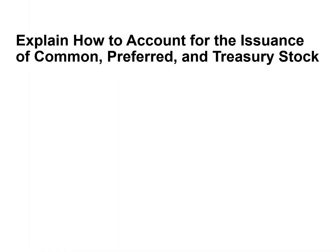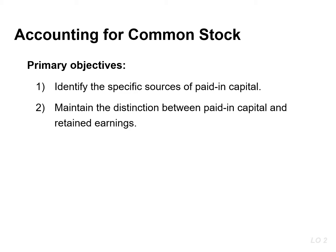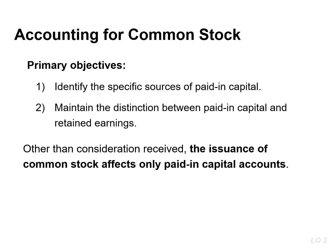This video will explain how to account for common, preferred, and treasury stock. When issuing common stock, the primary objectives in accounting are to identify the specific sources of paid-in capital and to maintain the distinction between paid-in capital and retained earnings. Other than the consideration received, such as cash, the issuance of common stock affects only paid-in capital accounts.